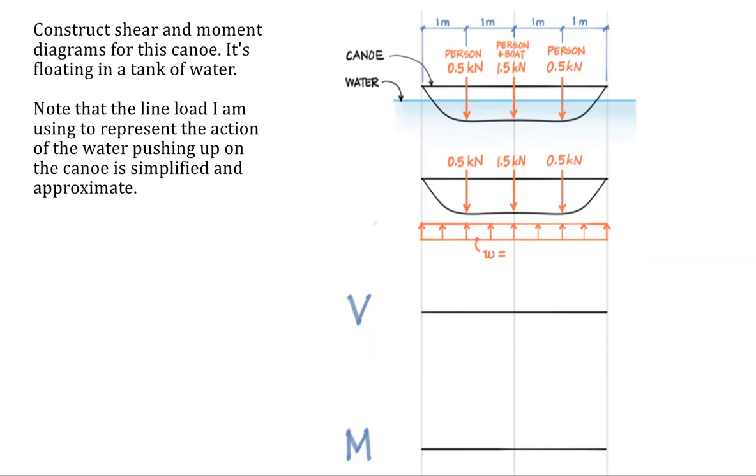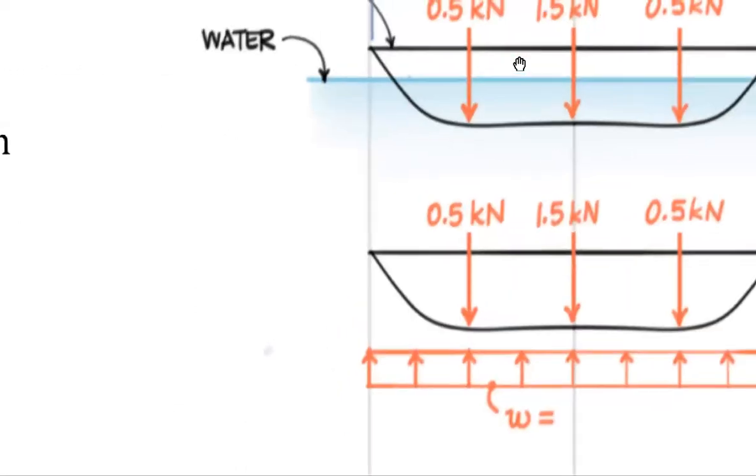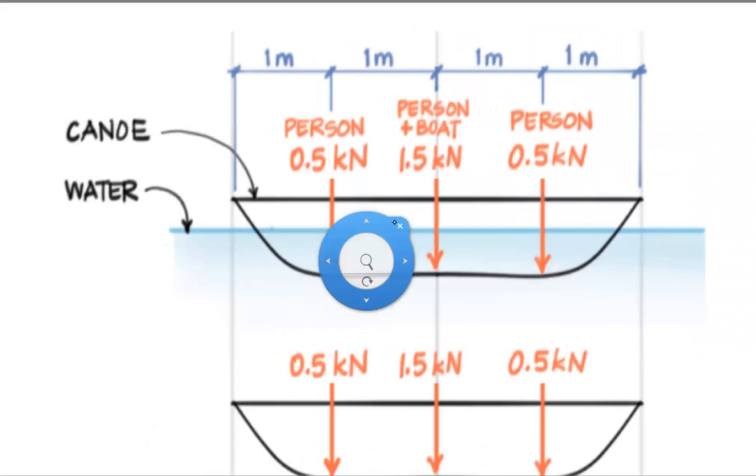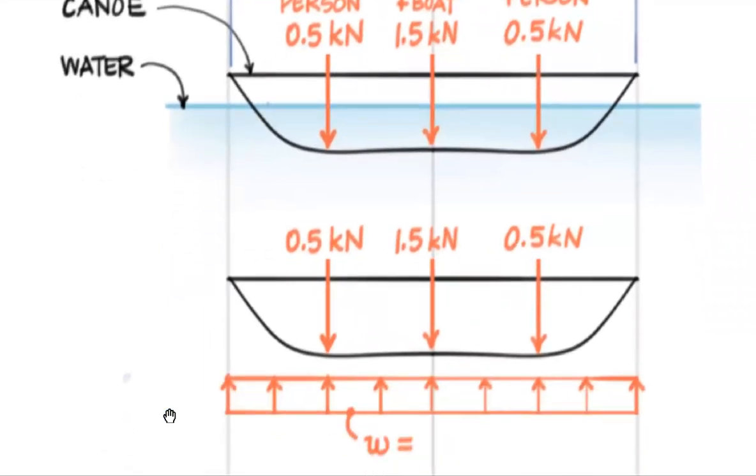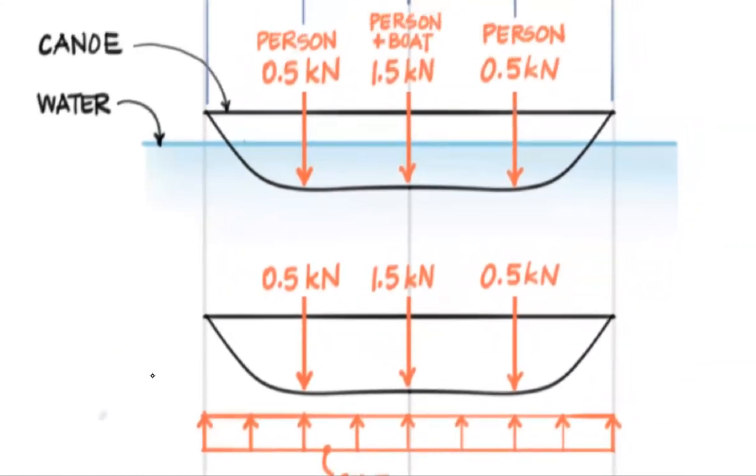This problem was inspired by the ASCE Concrete Canoe Competition. In that competition students design, build, and race their canoes and usually use an approximate method to analyze their canoe that is pretty similar to what we're seeing here. I want to talk a little bit about what the actual behavior would be and then we'll do shear and moment diagrams for our approximate simple model.